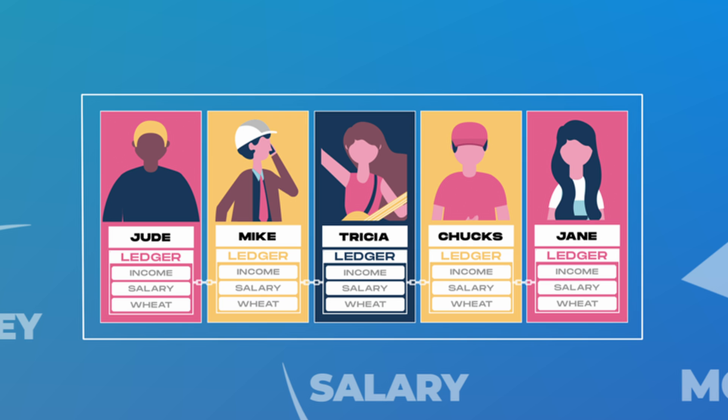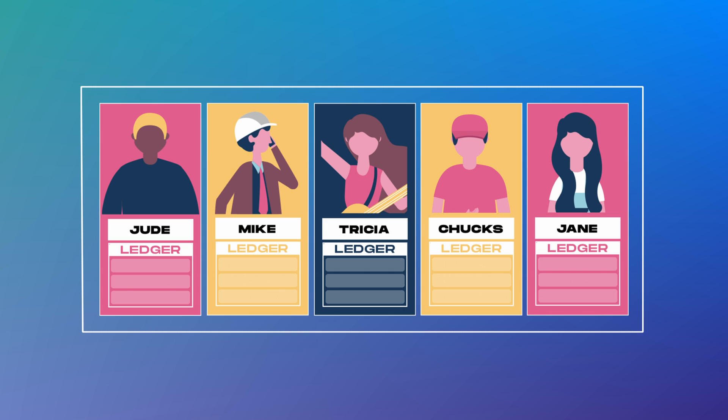Once this is done, nothing can be altered. This way, none of my friends can individually alter a transaction that has been verified and confirmed, because we all have a copy of the transaction. We can all see the transactions, but none of us can change it.